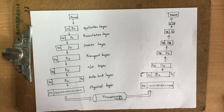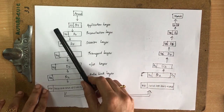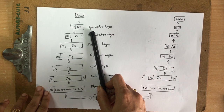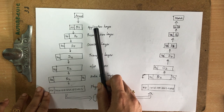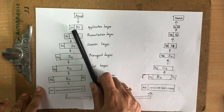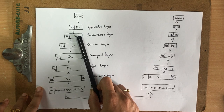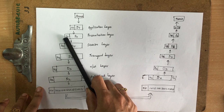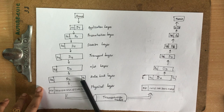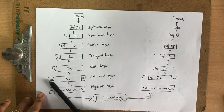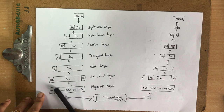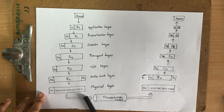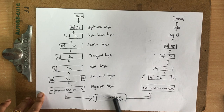Suppose Annie wants to communicate with Maria. Annie prepares data and sends it to the application layer, which adds its own header information — containing address and other relevant data. The header is added and passed to the presentation layer, which treats it as data and adds its own header, then sends it to the session layer, and so on. When it reaches the data link layer, a header and trailer are added — the trailer marks the end of the data. The data is then converted into bits, and all headers are converted into bits and transmitted through the transmission medium, such as coaxial cable or optical fiber.